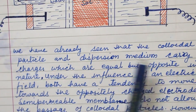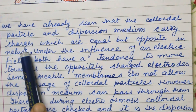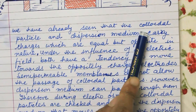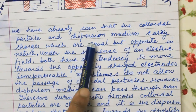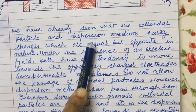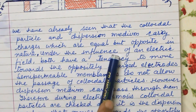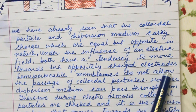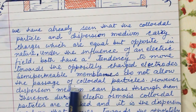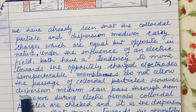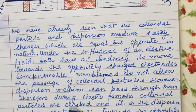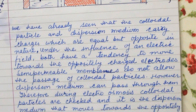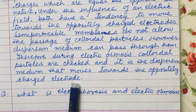We have already seen that colloidal particles and the dispersion medium carry charges — both have charges which are equal but opposite in nature. Colloidal particles have two types of charge, positive and negative, and the dispersion medium also has two types of charge. Under the influence of an electric field, both have a tendency to move towards the opposite-charge electrode. However, the semi-permeable membrane does not allow the passage of colloidal particles, while the dispersion medium can pass through it. Therefore, during electroosmosis, colloidal particles are held back and it is the dispersion medium that moves towards the opposite-charge electrode.